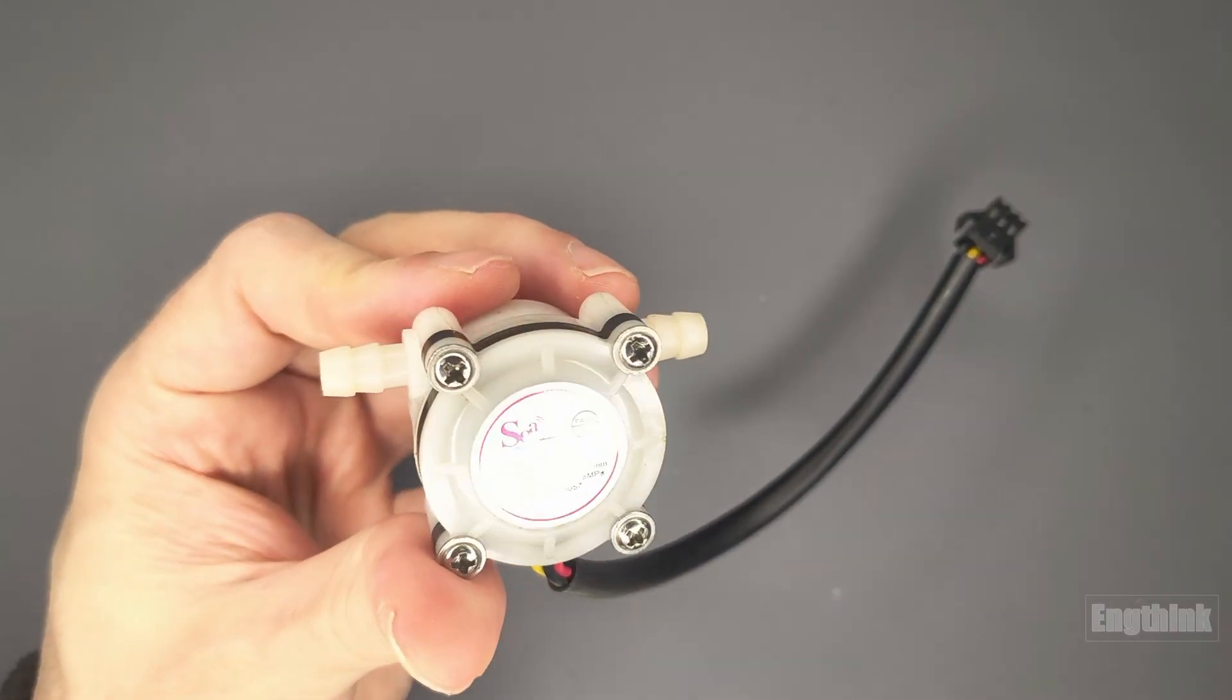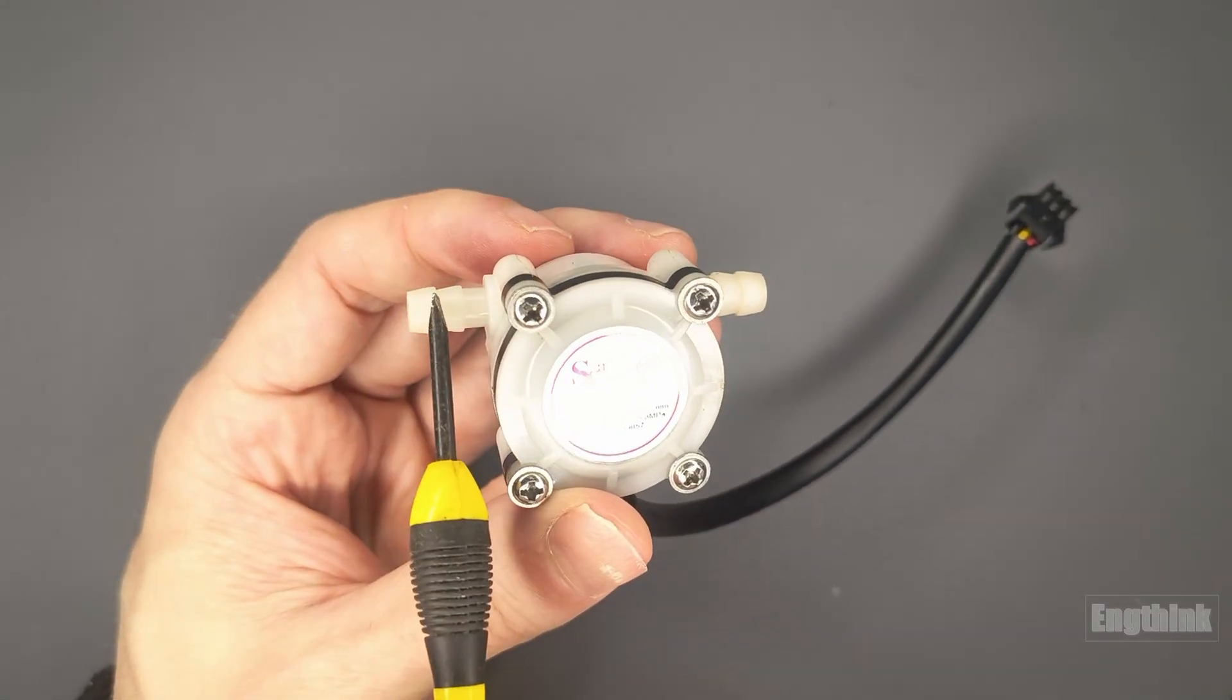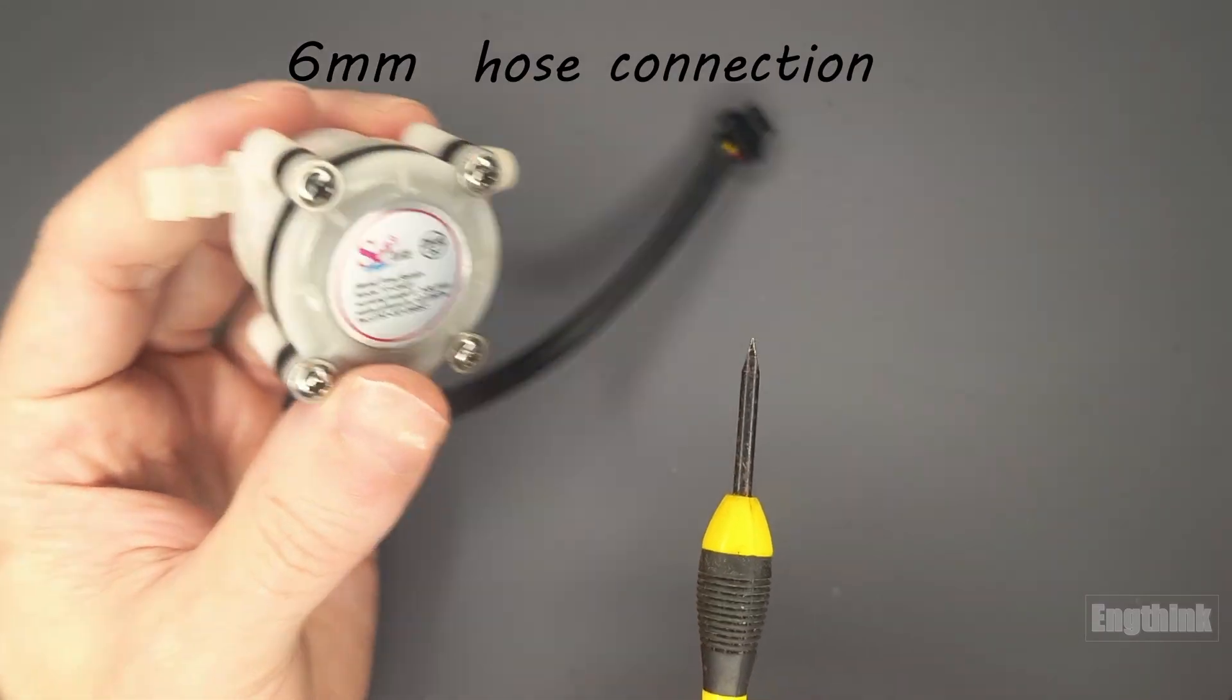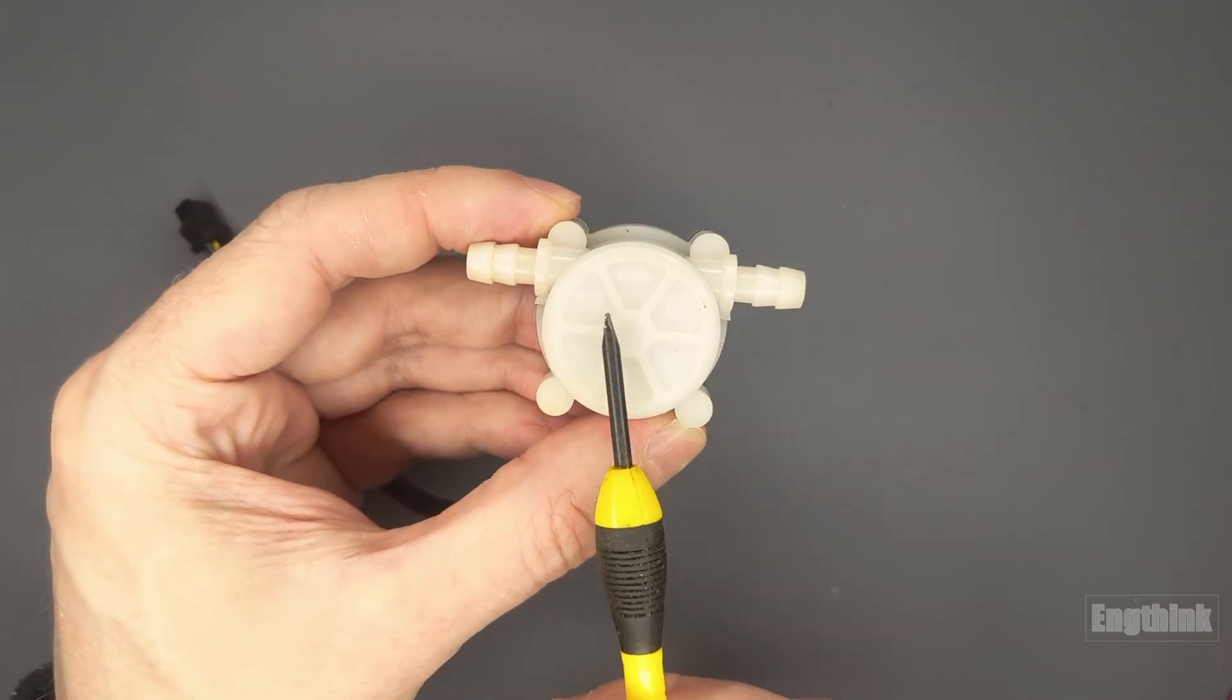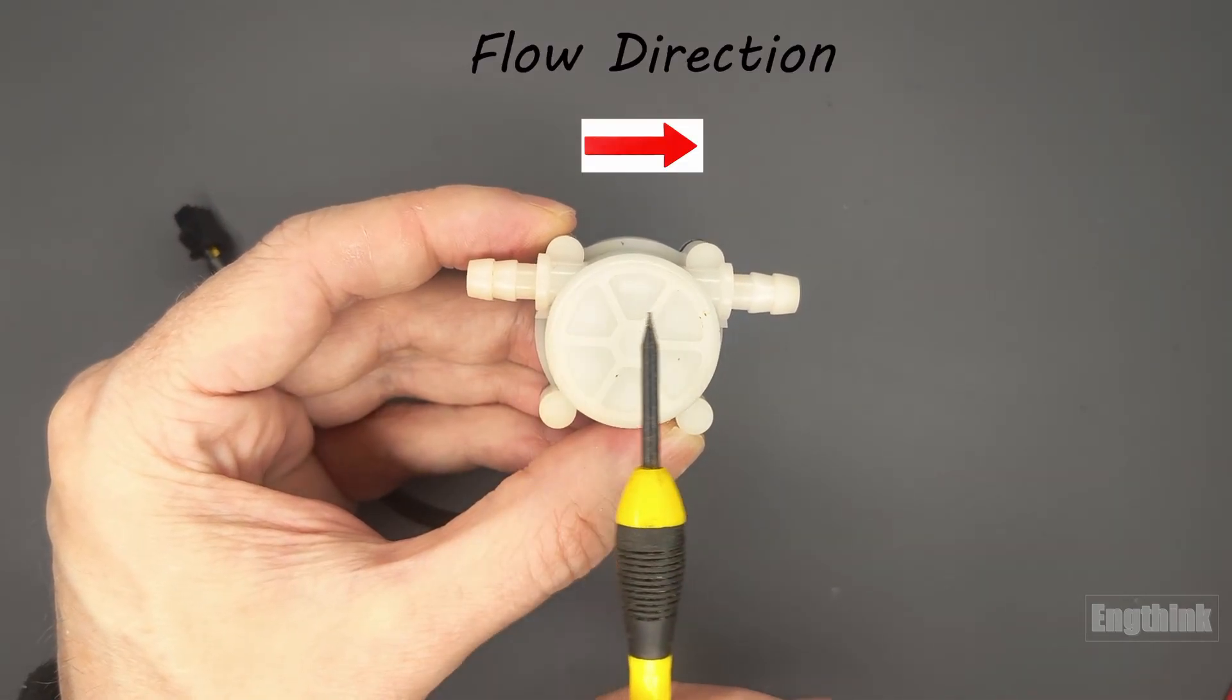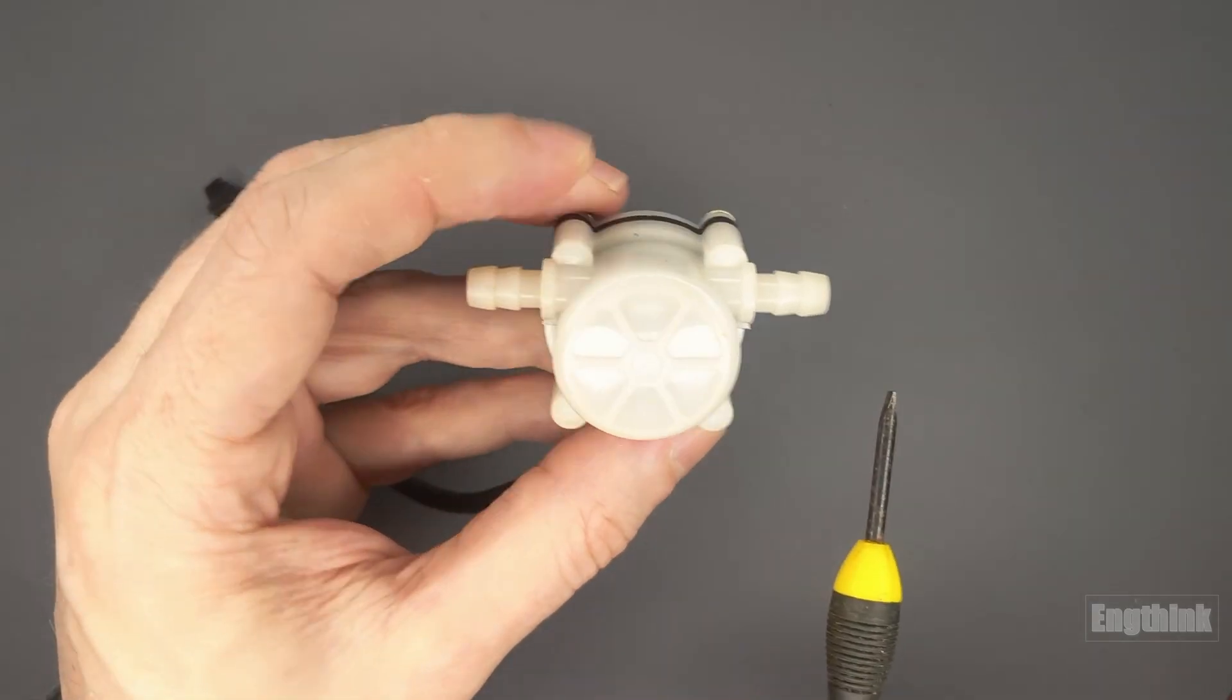The YF-S401 is a small, reliable device designed to connect easily to pipes with a 6mm diameter on both the inlet and outlet. One important aspect to note is the flow direction. The sensor body features an arrow indicating the proper water flow. It's essential to follow this arrow for accurate readings.